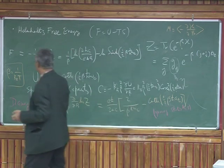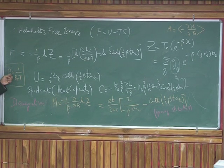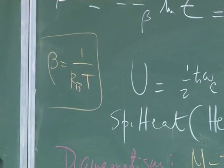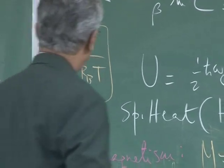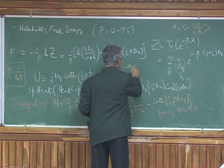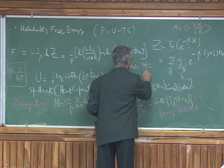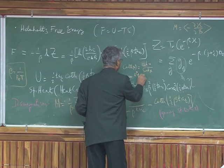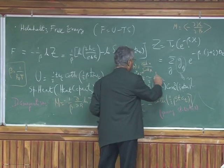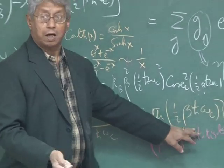Because what happens as T becomes very large, then beta becomes very small. A quantum statistical system would start looking like a classical system as you increase the temperature to very large values. So what happens when beta becomes very small? That cotangent x, see cotangent x is actually cosh x over sinh x. And cosh x is e to the x plus e to the minus x, and sinh x is e to the x minus e to the minus x. So therefore, when x is small, cotangent x will go like 1 over x to leading order.